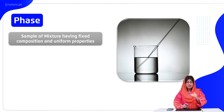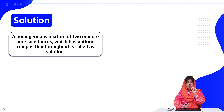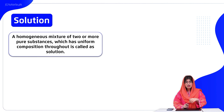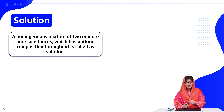A homogeneous mixture of two or more pure substances which has uniform composition throughout is called a solution. Homogeneous mixtures can also exhibit the behavior of heterogeneous mixtures. When components are mixed and stirred, we get uniform composition throughout the system — that is a solution.